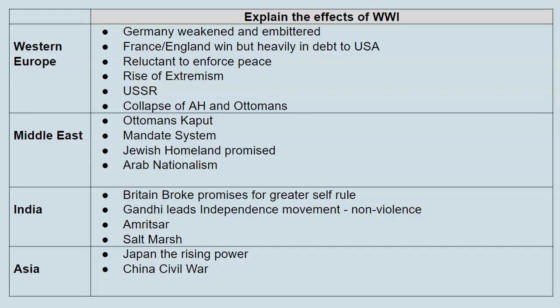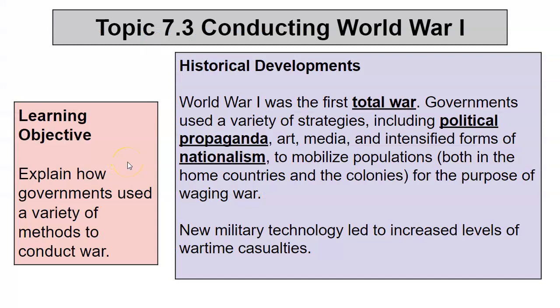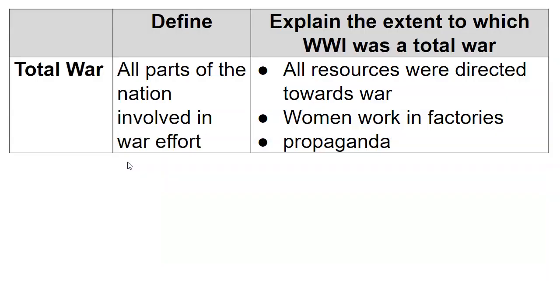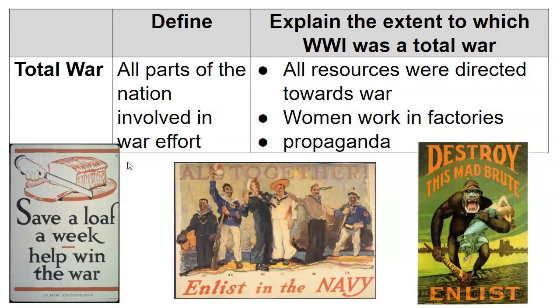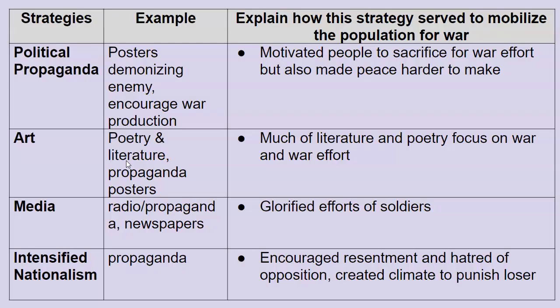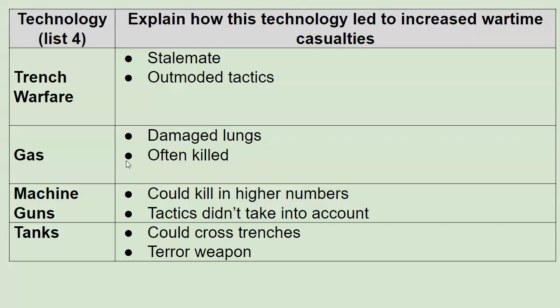In Asia, Japan becomes the rising power and China has their civil war. The conduct of World War I — this is a total war, meaning everything is directed towards the war effort. You have political propaganda, art, and media with intensified nationalism. All of these are used to mobilize people towards war, motivate them to sacrifice, glorify the efforts of soldiers, and create resentment and hatred of the other side. This creates a lot of the climate to punish the Germans after the war.